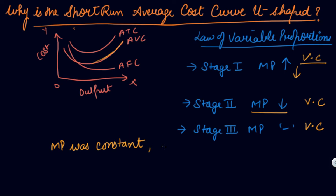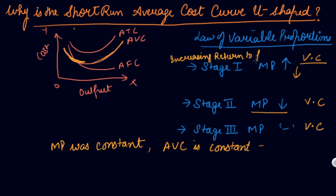Where marginal product is constant, average variable cost is also constant. Before that point, average variable cost is falling — this corresponds to increasing returns to factor. As you employ more variable factors, the fixed factors are sufficient to produce more output. This is the increasing return to factor phase. After that comes the constant return to factor phase.